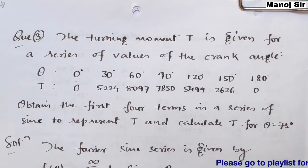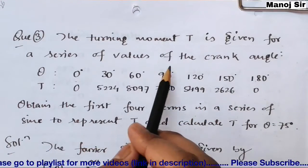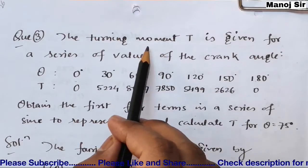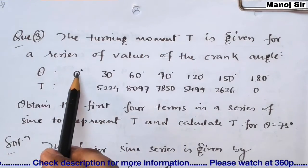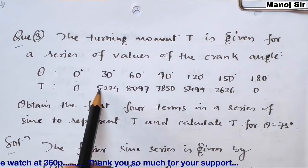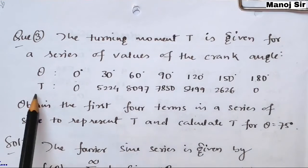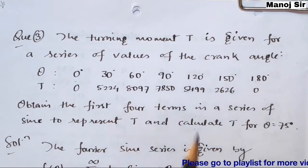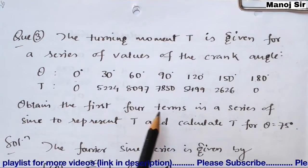Let us start with problem number three. The turning moment T is given for a series of values of the crank angle. We have various crank angles and the corresponding turning moment T. At theta equals 0 degrees, T equals 0; at theta equals 30 degrees, T equals 5224. For various values of theta we have corresponding values of turning moment T. What is asked in the problem: obtain the first four terms.